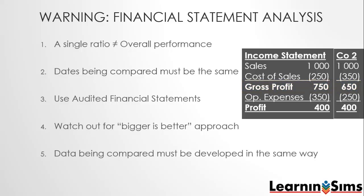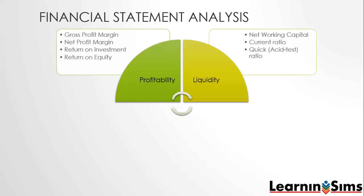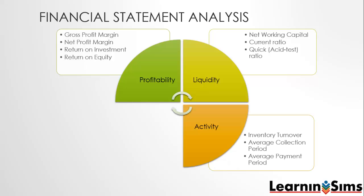There are five groups of ratios that are generally looked at for analysis. These are the profitability ratios, generally looking at the performance of your operations over a certain period. Then we have liquidity ratios, which assist us to understand whether we can meet our short-term obligations with our current assets. We then have activity ratios, which assist us to understand the speed at which things are happening in the business, especially within our current assets and current liabilities.